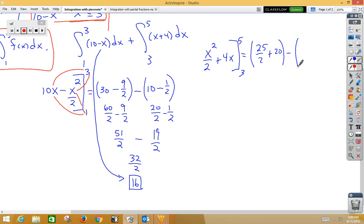Minus, plug in the bottom bound, we get 9 over 2, plus we'd plug in again and get 12. Again, we could make like fractions. We have 25 halves plus 40 halves makes 65 halves on the left side. On the right side, 9 halves plus 24 halves gives us 33 halves.